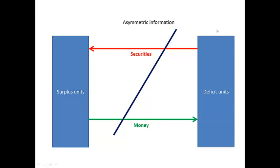Asymmetric information is another problem related to direct financing. The deficit unit knows all about its own company and is relatively sure that it's going to make a profit by investing. But the surplus unit may not know anything about the deficit unit and therefore may not want to supply its excess funds to the deficit unit.